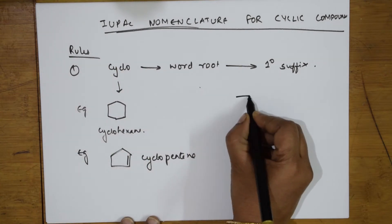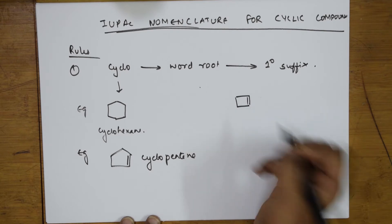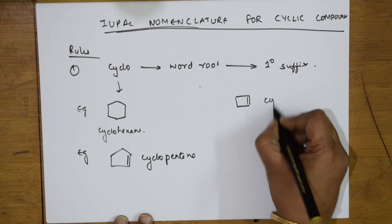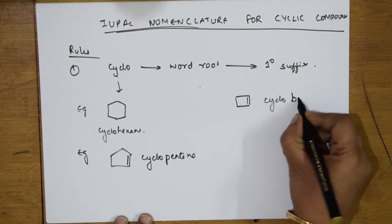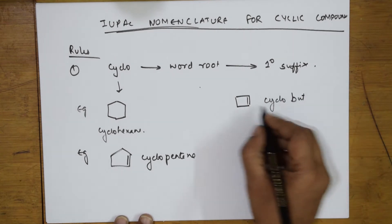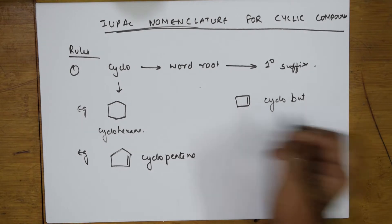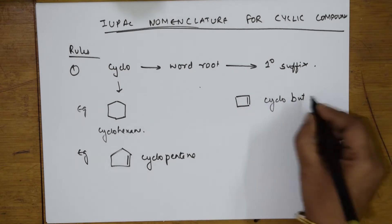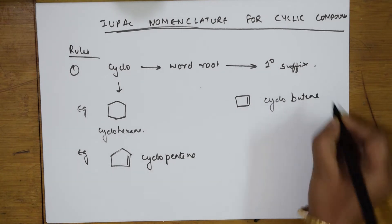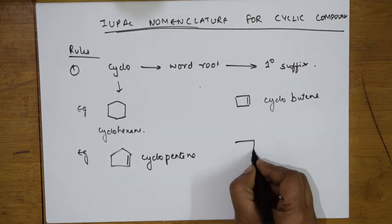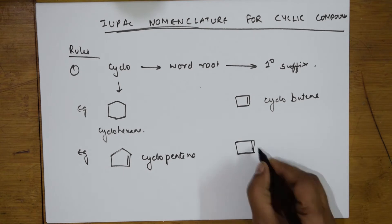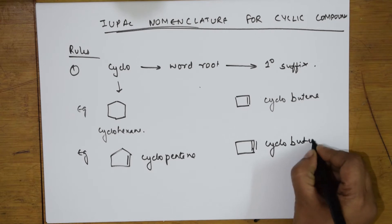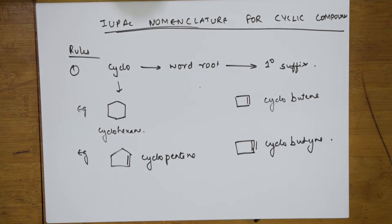Let us take one more example. This compound has 1, 2, 3, 4 carbons — it is a cyclo compound, bute, 4 carbons. If I have a triple bond — one inside, one outside — then this is cyclobutyne.